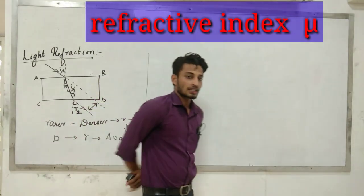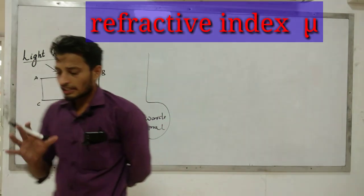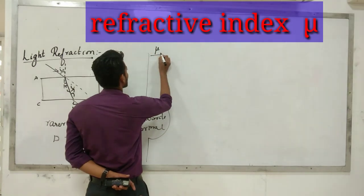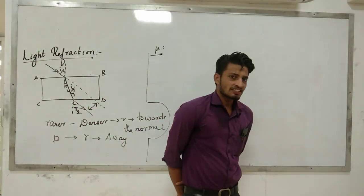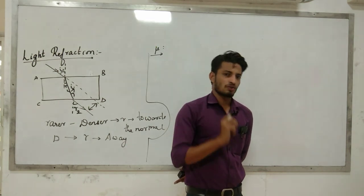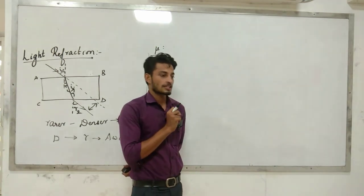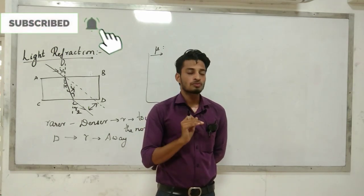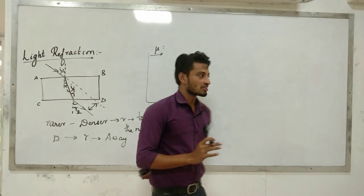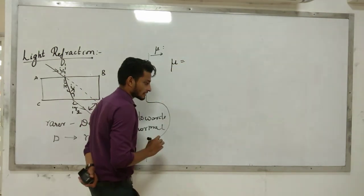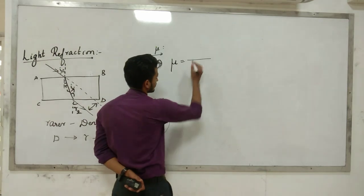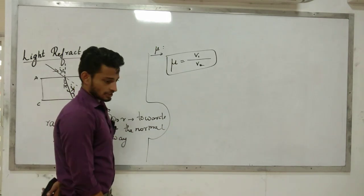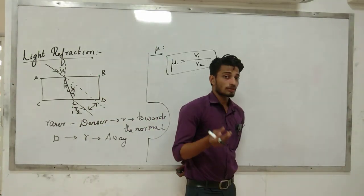Next topic: refractive index. The refractive index is a number that represents how much light bends. We calculate it using two velocities — the ratio of the two velocities. We represent it as mu12. So mu12 is the ratio of velocity in medium 1 to velocity in medium 2.